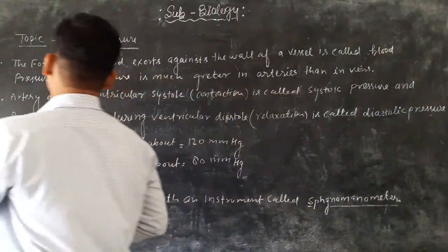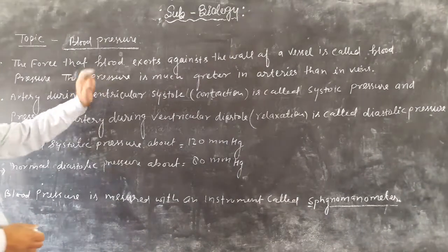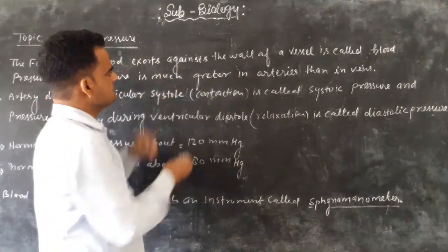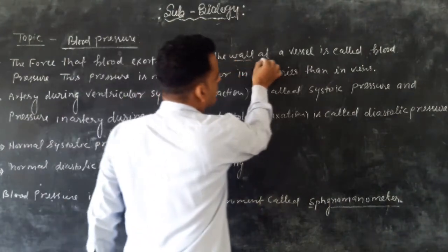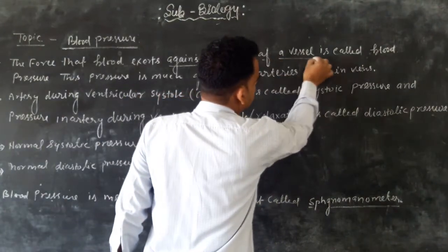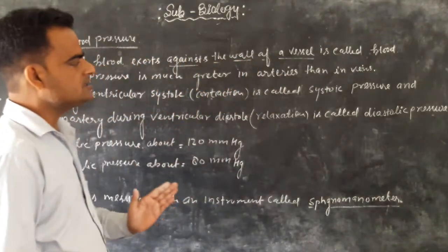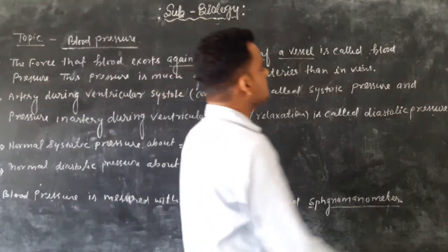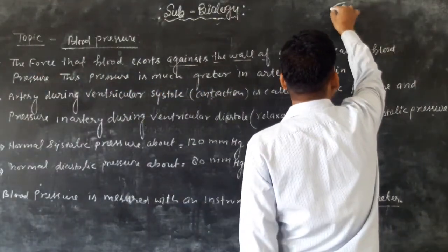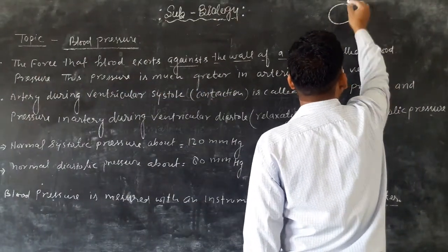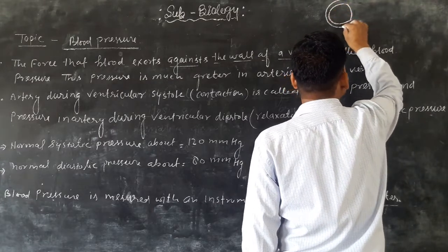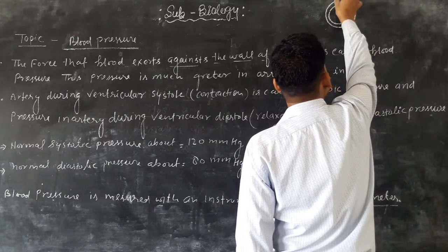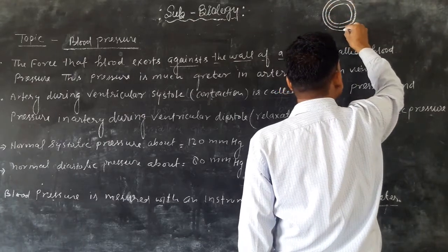Blood pressure is the force the blood exerts against the wall of the vessels. That is the wall of the vessels present in this part for the blood vessels. That is the blood vessels — the wall of the blood vessels.